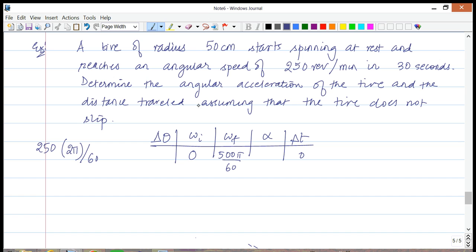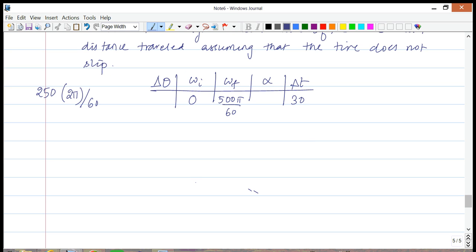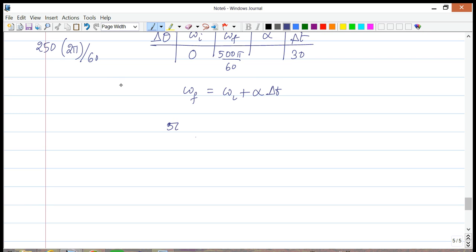We have the time as 30 seconds. Great, we have all the information and now we can use our first equation and figure out the value of the angular acceleration. So we have omega f, which is 500π/60, equals 0 plus alpha times 30. This gives us alpha equals 500π divided by 1800 radians per second squared.